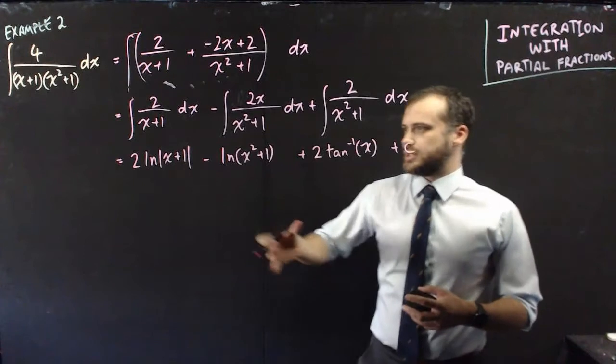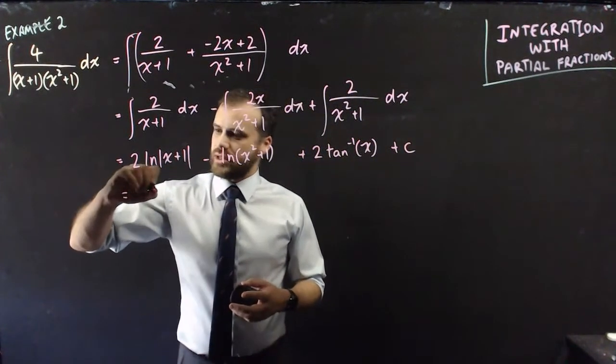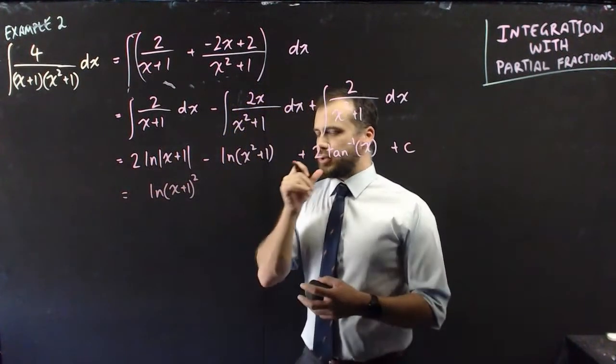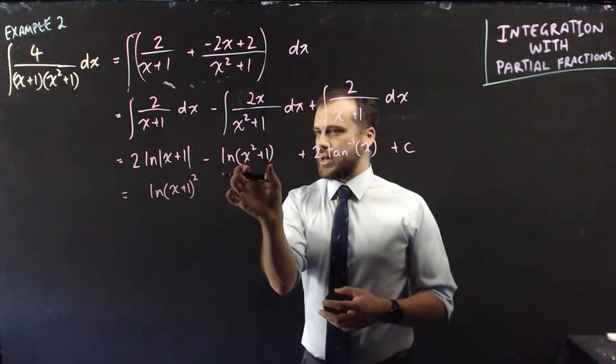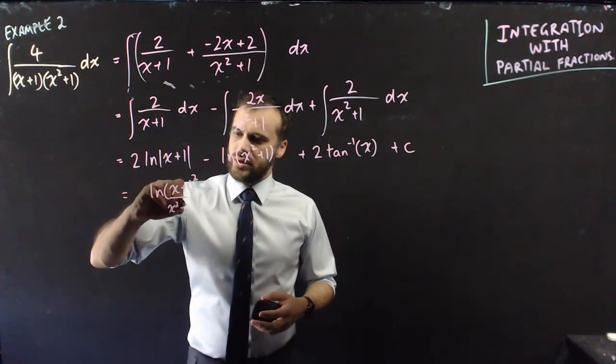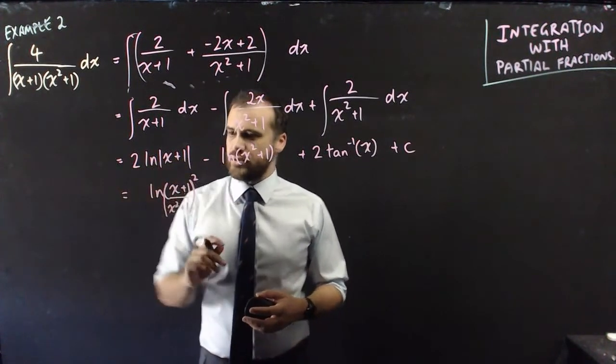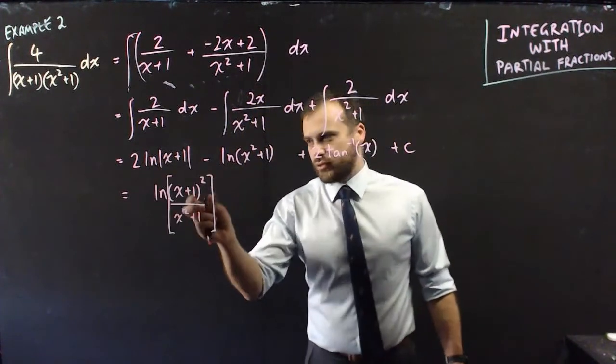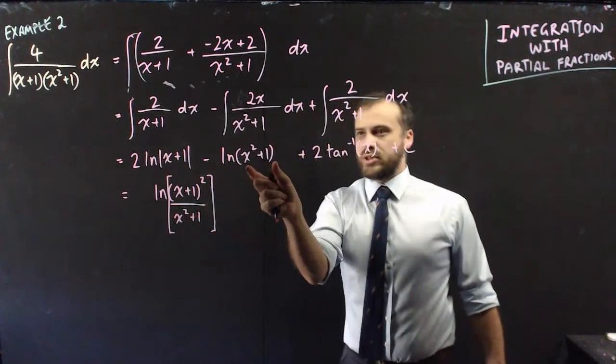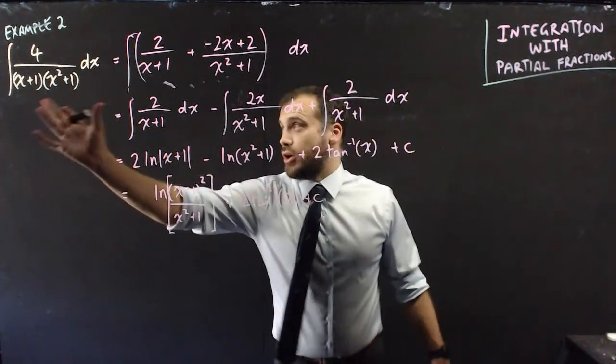But we could also simplify this a little bit because we can bring that 2 out to here. So that's going to make it ln x plus 1 squared. But also we've got minus another ln there, so we can put that x squared plus 1 on the bottom of that and extend those brackets. A little more like that, of course. x plus 1 squared divided by that thing that we're subtracting from it. And then this stuff as well. And that is the integral of that.